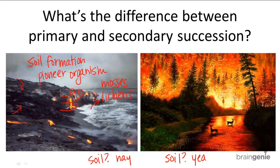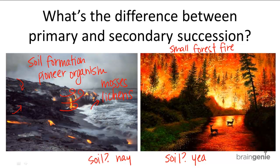Secondary ecological succession can occur after a small forest fire or after a logging company clears a piece of land. This doesn't exactly look like a small forest fire, but let's pretend it is. When a fire burns down the trees, it still keeps the soil intact, so it doesn't have to go through all the processes that primary succession does for soil formation. It doesn't need pioneer organisms because there are already organisms within the soil and around it as residues from the old ecosystem. Depending on how much is left of the old ecosystem, secondary succession can start in the middle and grow into the final climax community.